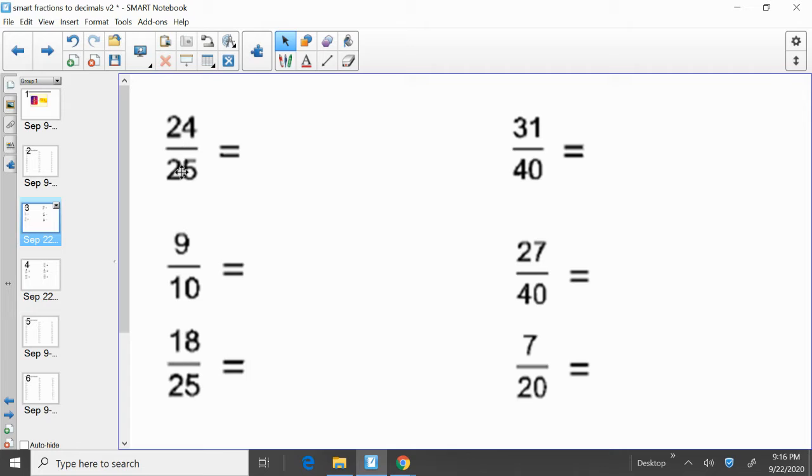Twenty-four, divide it by twenty-five. When you take twenty-four, divide it by twenty-five in your calculator, you get the answer of zero point ninety-six. So twenty-four over twenty-five equals zero point ninety-six.